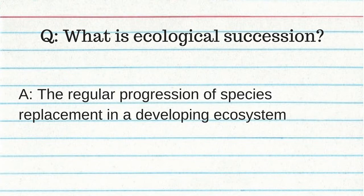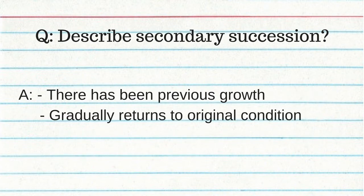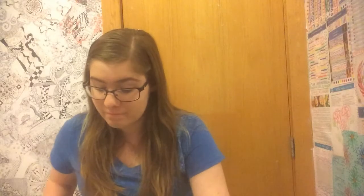What is ecological succession? The regular progression of species replacement in a developing ecosystem. Primary succession occurs on land where nothing has grown before and there is no soil; it begins with a pioneer species that prepares the area for other life forms. Secondary succession occurs where there has been previous growth and it gradually returns to its original condition. A climax community is a stable ecosystem where succession has stopped; if altered, it can usually recover through gradual changes back to long-term stability.